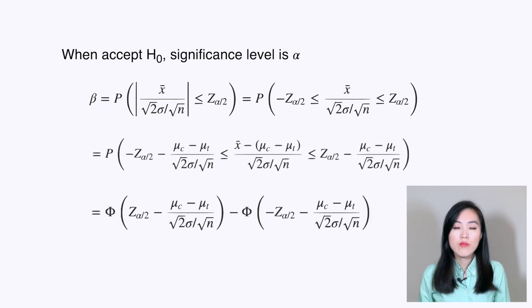Finally, we can represent β using Φ, the cumulative distribution function of the standard normal distribution.